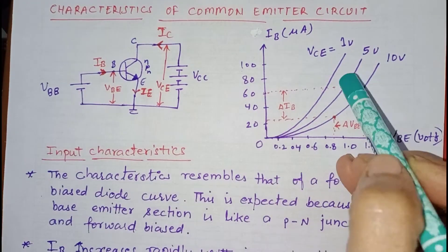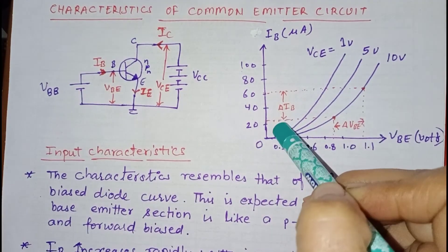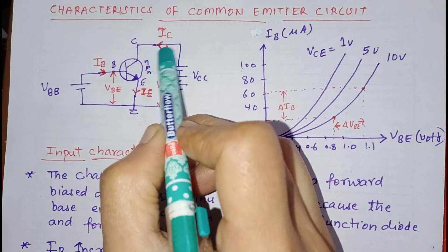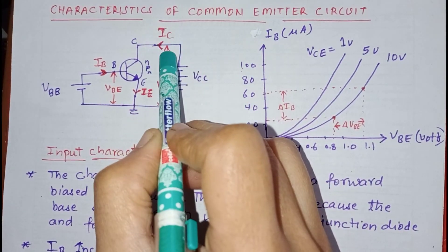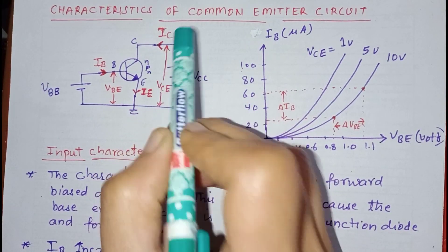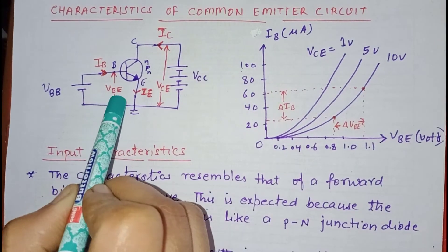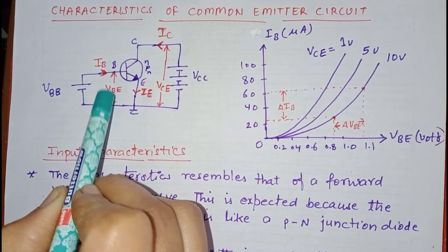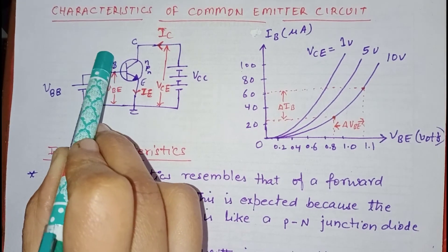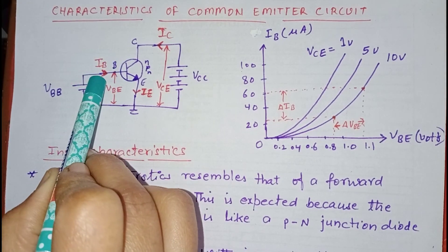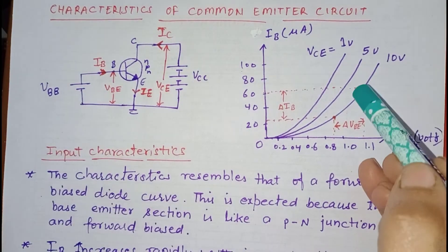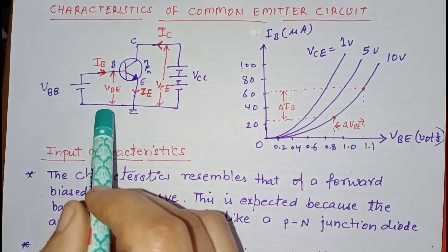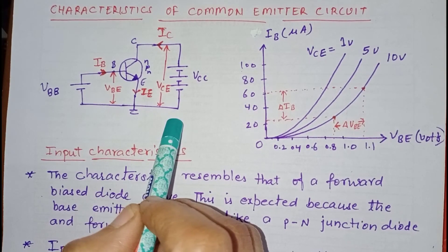We will get one curve. Then we fix some other value of VCE, change the value of VBE in steps, and record the corresponding values of IB. By repeating this process we obtain a family of input characteristic curves.